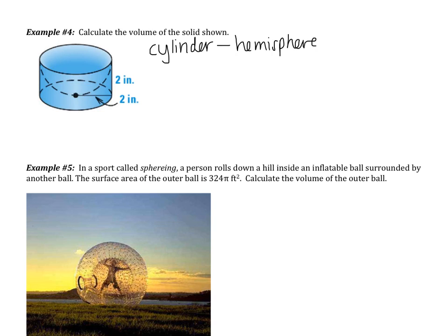So it's like we took a cylinder and we cut a hemisphere out of it. So in order to find the volume of the solid, I'm going to have to find the cylinder, the hemisphere, and then subtract them. Starting with the cylinder.